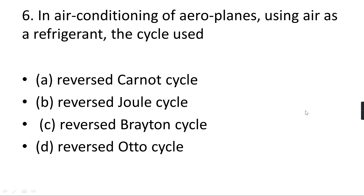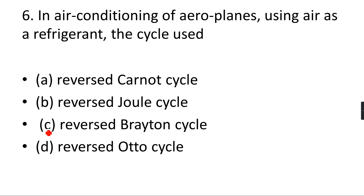Next question: In air conditioning of an aeroplane using air as a refrigerant, which cycle is used? The options are: Reverse Carnot cycle, Reverse Joule cycle, Reverse Brayton cycle, or Reverse Otto cycle. We discussed a similar question in Mock Test 2. The correct answer is Reverse Brayton cycle — option number C.